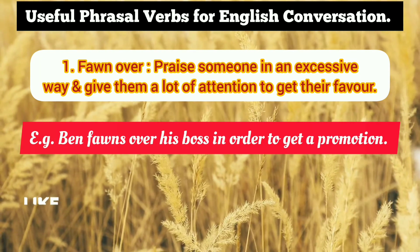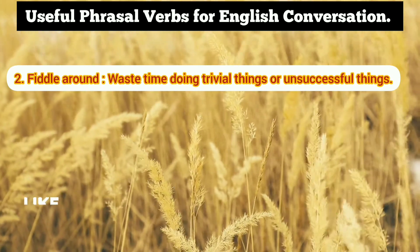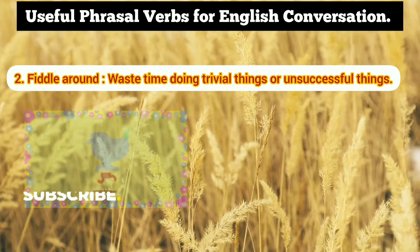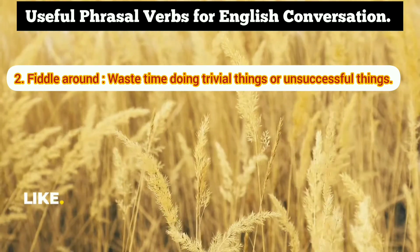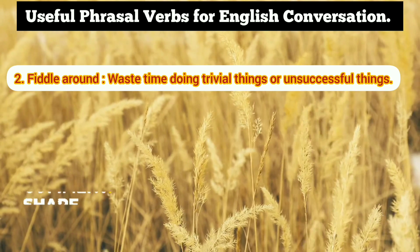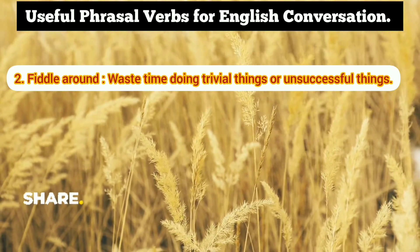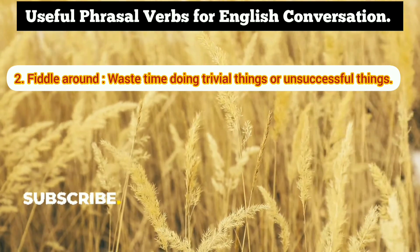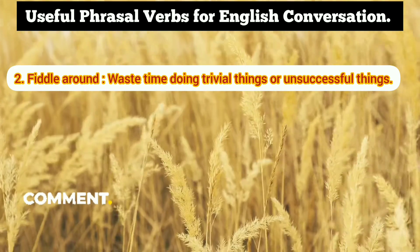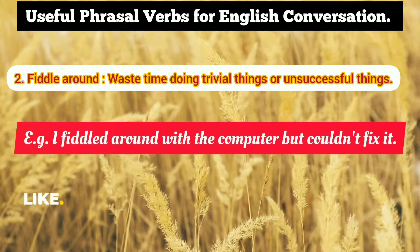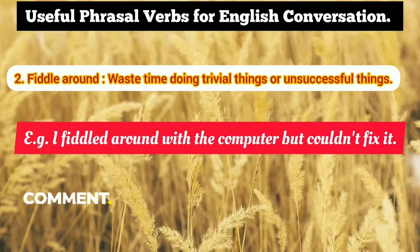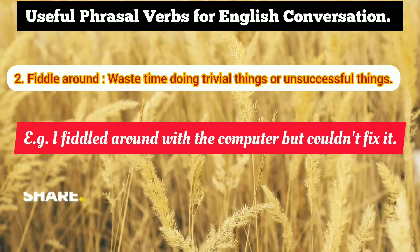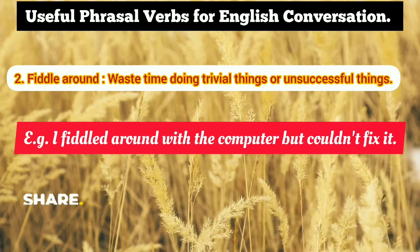Up next is the second phrasal verb: 'fiddle around.' Fiddle around means to waste time doing trivial, unimportant, or unproductive things without any intended results. Example: I fiddled around with the computer but could not fix it — meaning I wasted my time trying to fix it but ultimately could not.